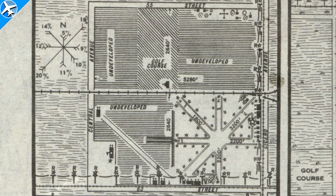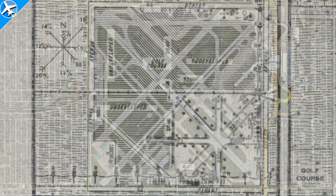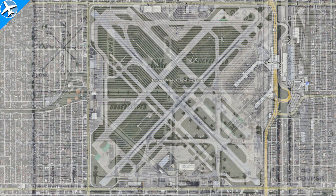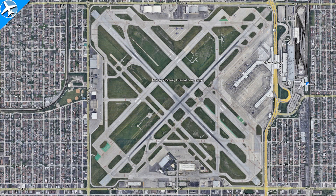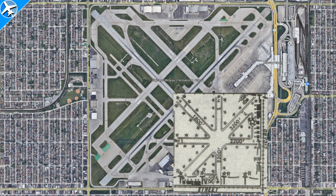In 1929, Chicago Municipal would be the world's busiest airport. It would also have its first air traffic controller that same year, who would wave a flag telling the pilot they are cleared for takeoff or landing. Chicago Municipal Airport would also have a name change in 1949 to Midway Airport, the namesake coming from the Battle of Midway. Here's the airport today in relation to what it was in the early days.